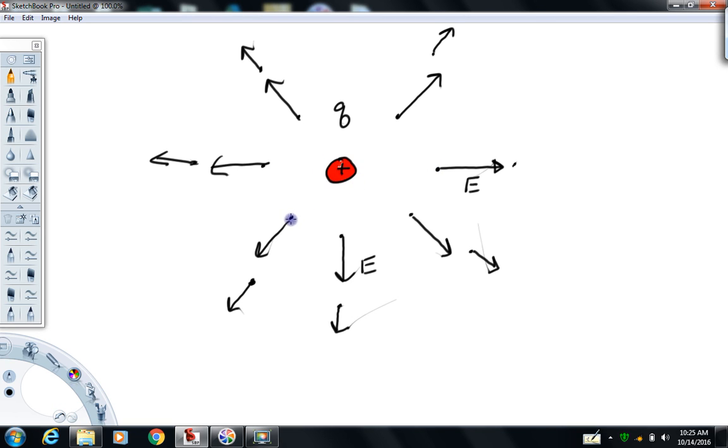If this were negatively charged, the electric field vector at this point would be pointing this way, and this one would be pointing this way, and so forth. So rule of thumb here, electric fields always point away from positive charges and towards negative charges.